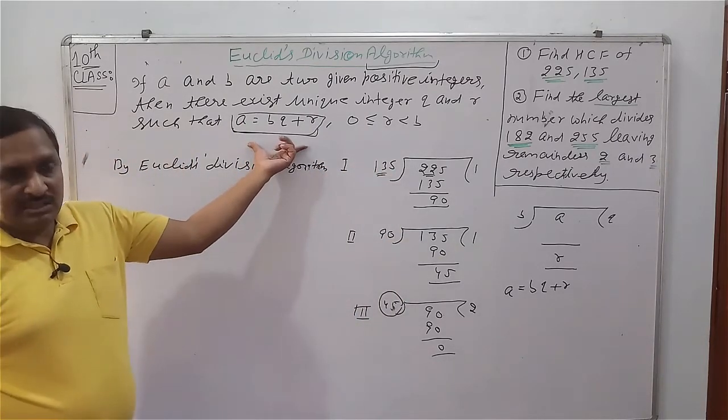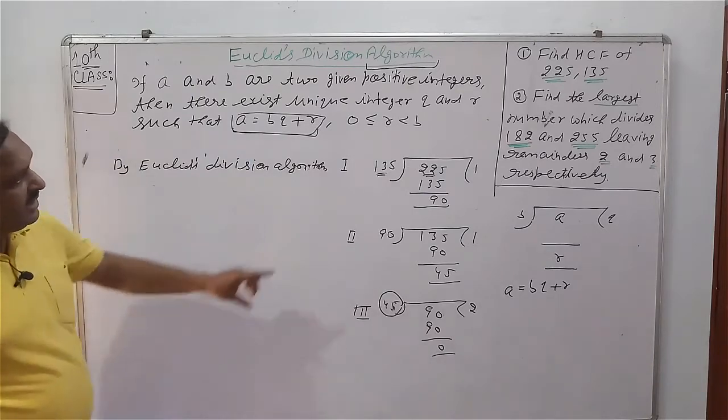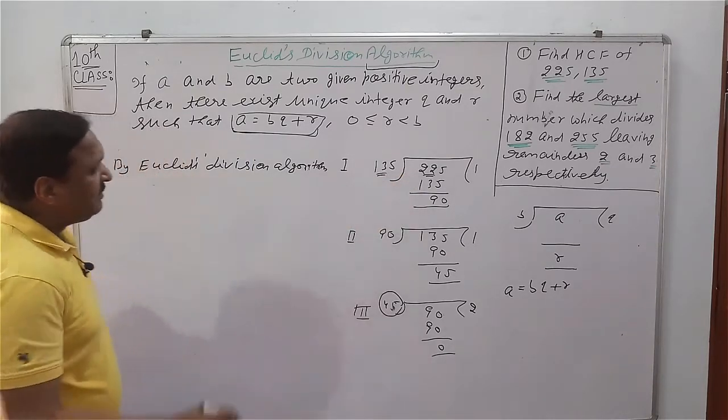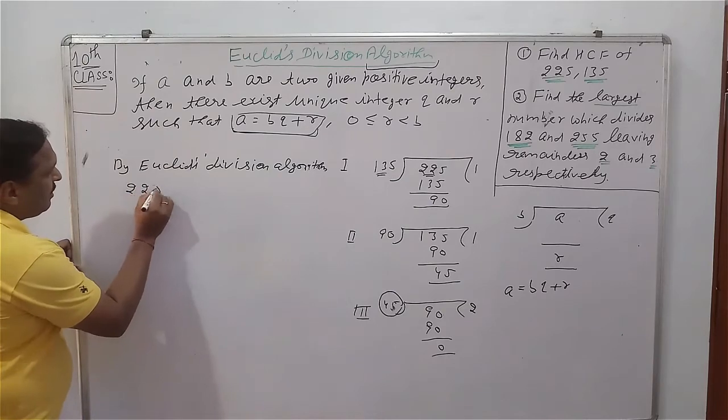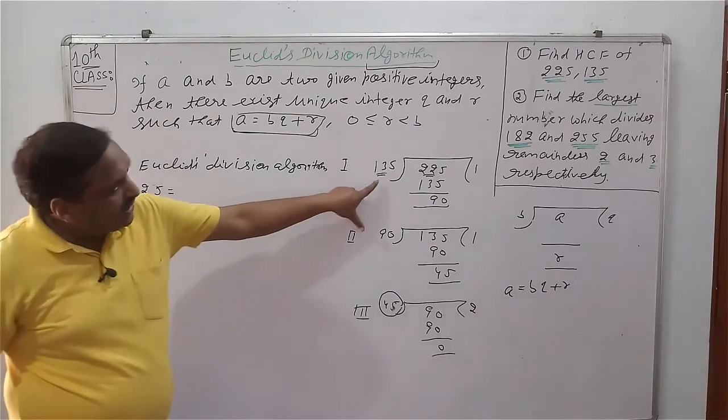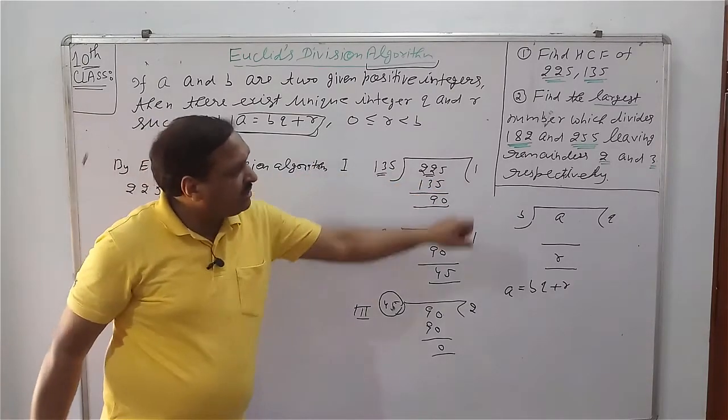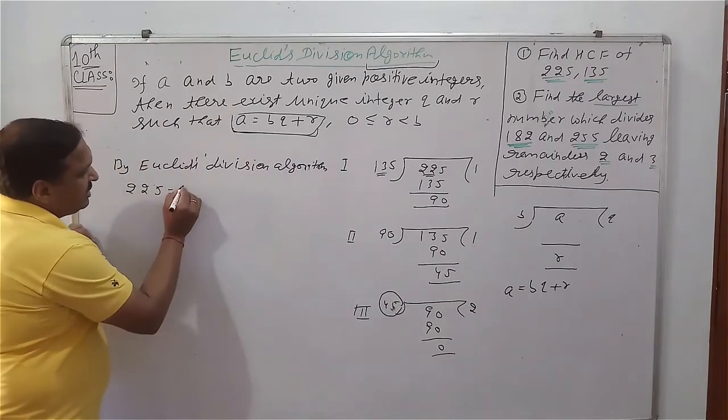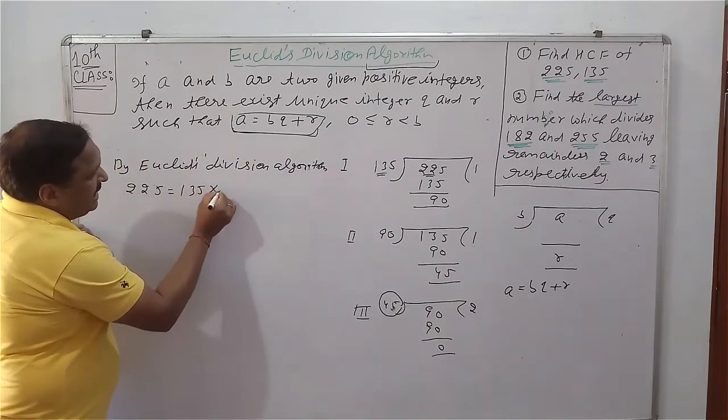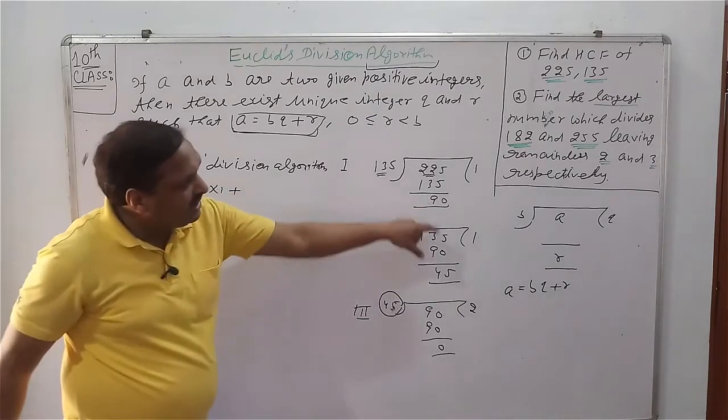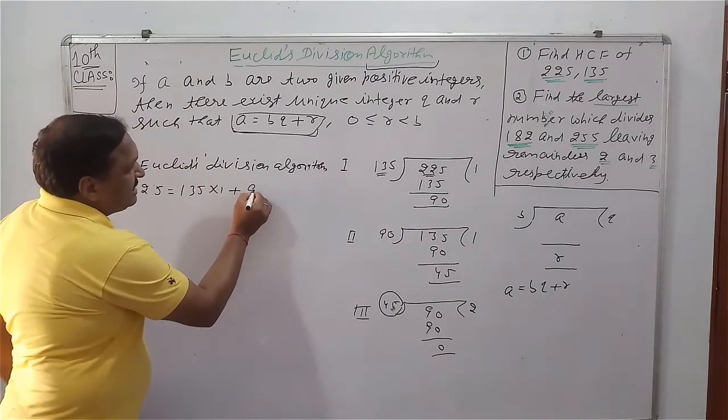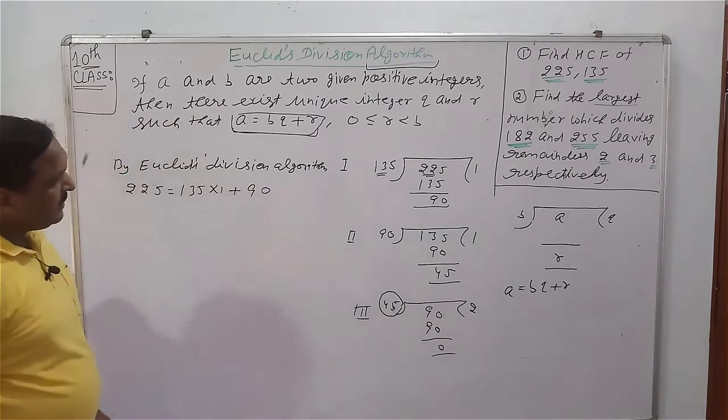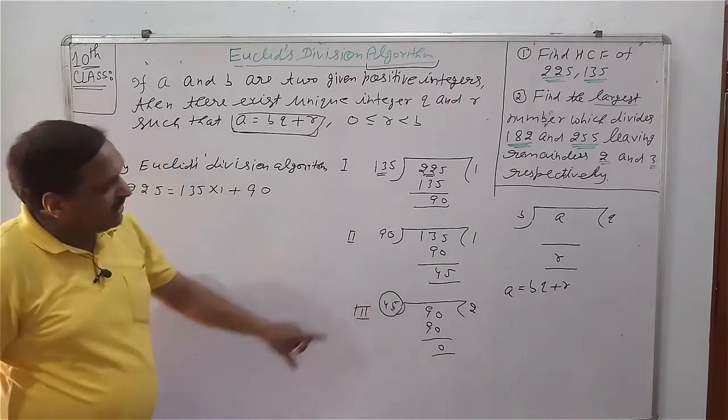What is A is equal to BQ plus R? Now in these three steps, we will write in this form. In your first step, A is 225, B is 135, and Q is 1.